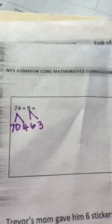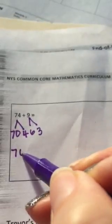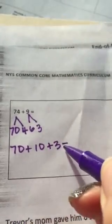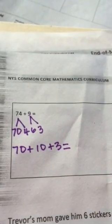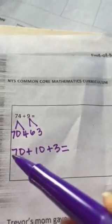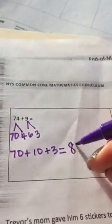So now I can rewrite to a more simple equation which is 70 plus 10 plus 3. And kids can be really successful with this because we've been practicing counting by 10s and they can say 70 plus 10 equals 80 plus 3 more equals 83.